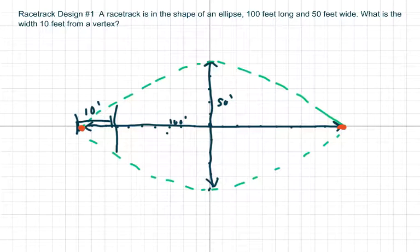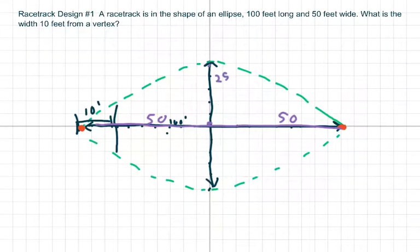So we have a racetrack in the shape of an ellipse, 100 feet long. So this whole thing is 100 feet. That means this is 50 and this is 50. And it's 50 feet wide. So half of this is 25, and this is 25.